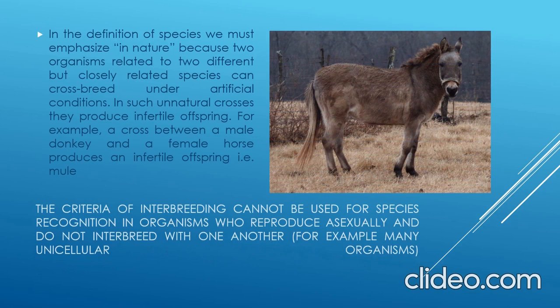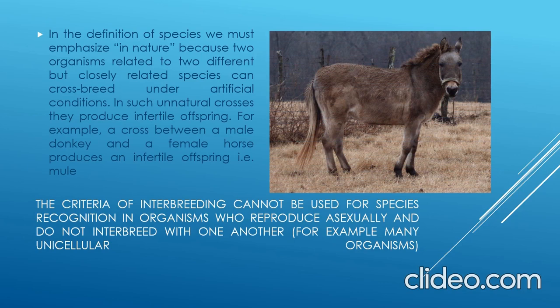However, the criteria of interbreeding cannot be used for species recognition in organisms that reproduce asexually and do not interbreed with one another — for example, many unicellular organisms.